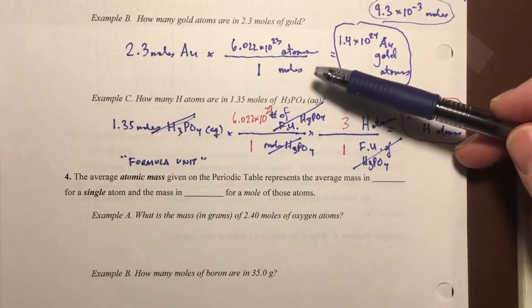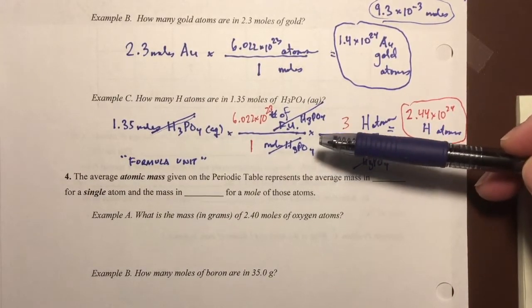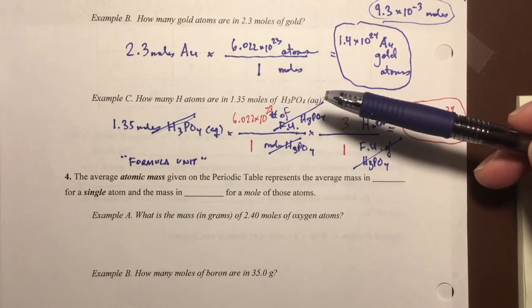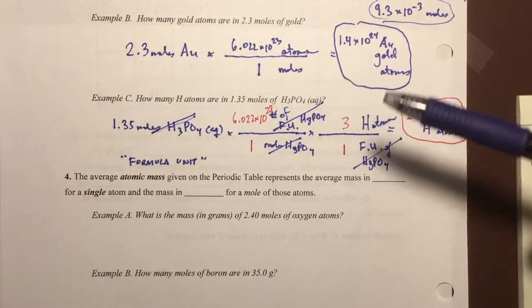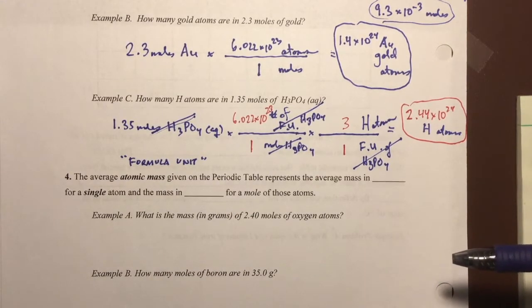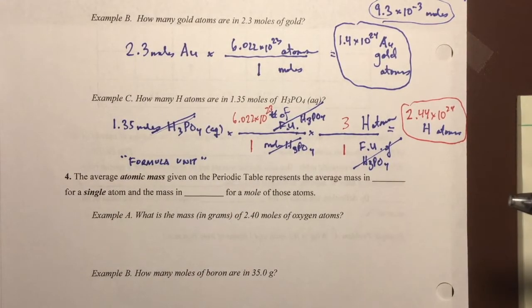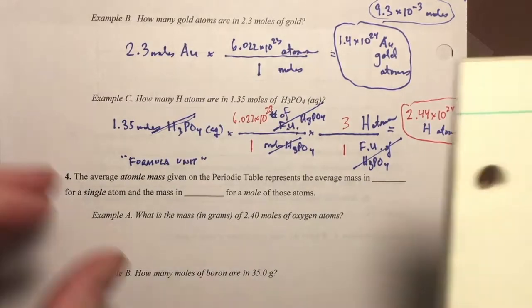A lot of students use Avogadro's number in conversion factors for problems where it's not needed. So I want to do a couple more practice problems where you do need it before we get into doing molar mass conversions where it's not necessarily needed. So I'm going to move over to just some scratch paper here.